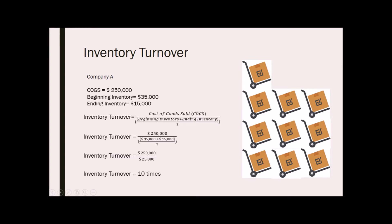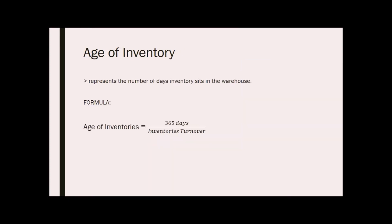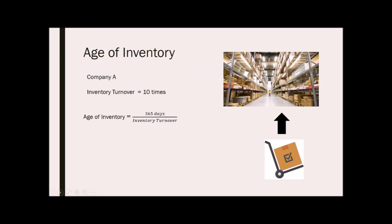Next up is the age of inventory. Along with the inventory turnover ratio, the business owner should also look at the day sales in inventory, which highlights how many days on average it takes to sell the inventory. Age of inventory represents the number of days inventory sits in the warehouse, or the number of days from purchase of the inventory to the sale of the same. For example, Company A has an inventory turnover of 10 times. To get the age of inventory, we divide 365 days over the inventory turnover — that is 365 over 10 — giving an age of inventory of 36.5 days. This means it takes the company 36.5 days before they can restock their current inventories. The lower the ratio, the quicker the inventory is selling, which is good for the company.